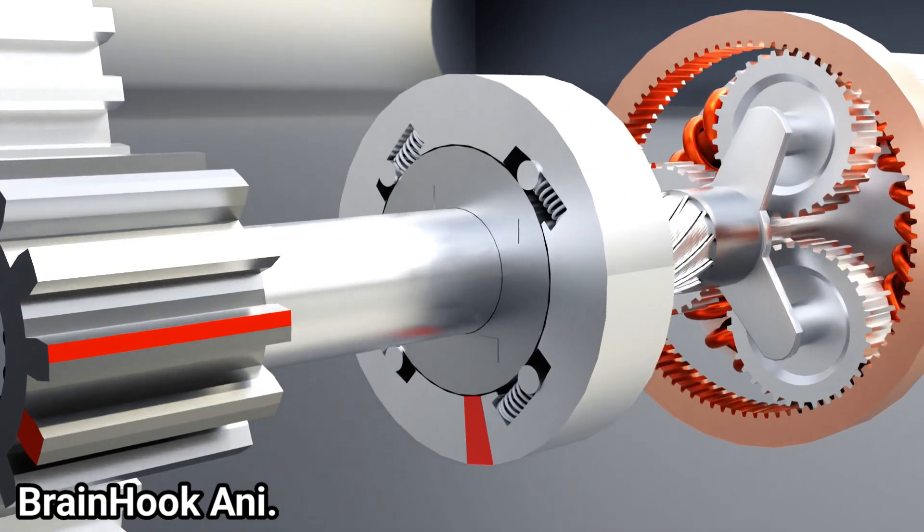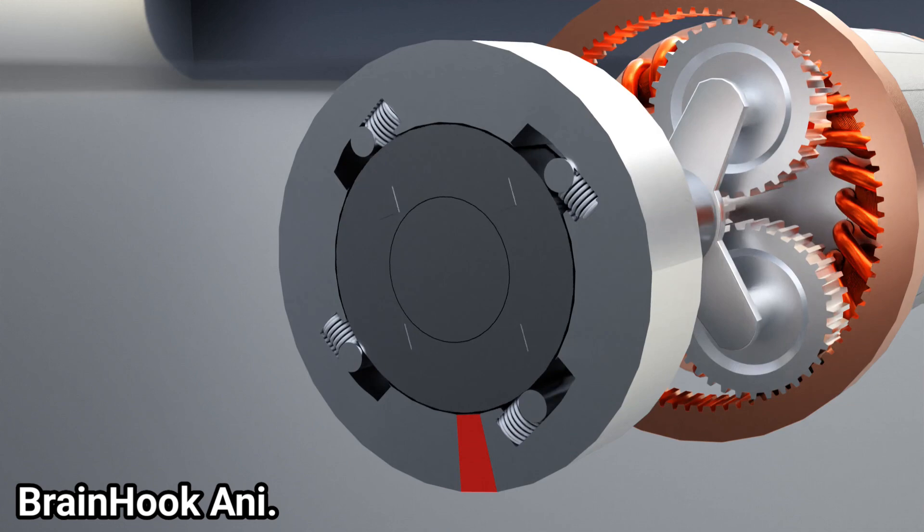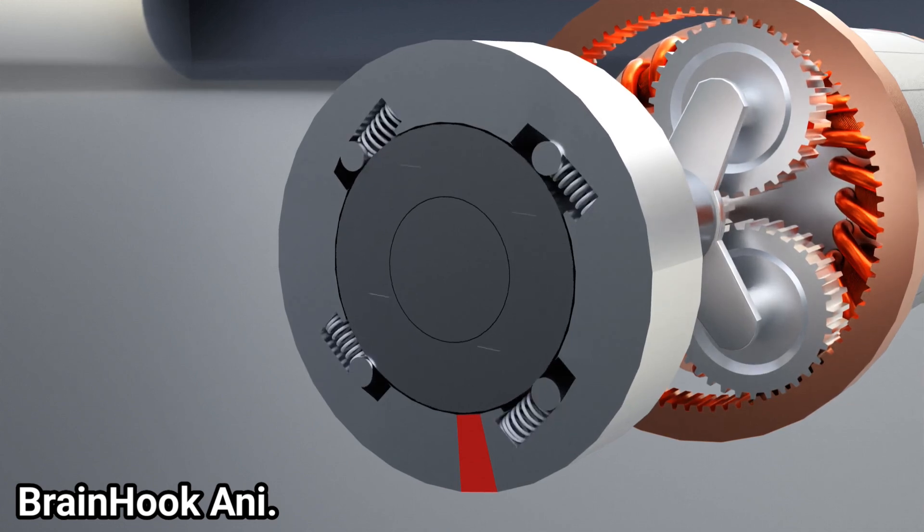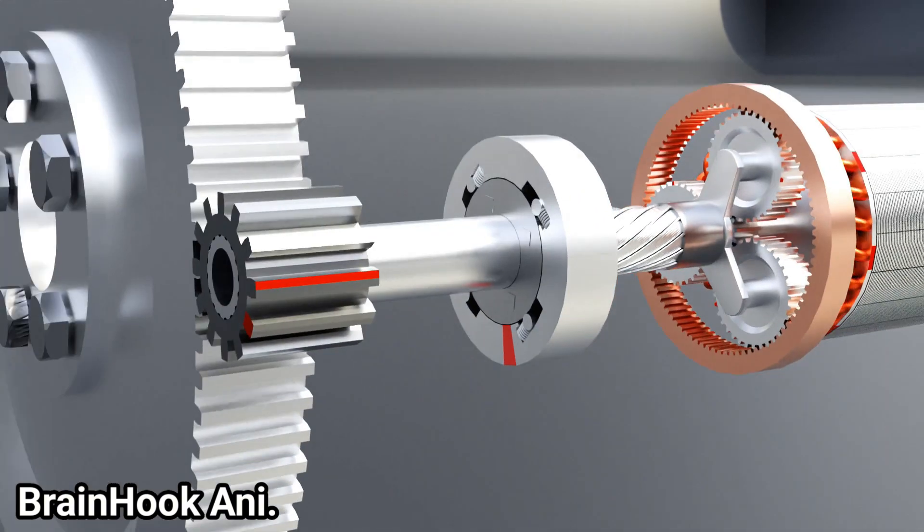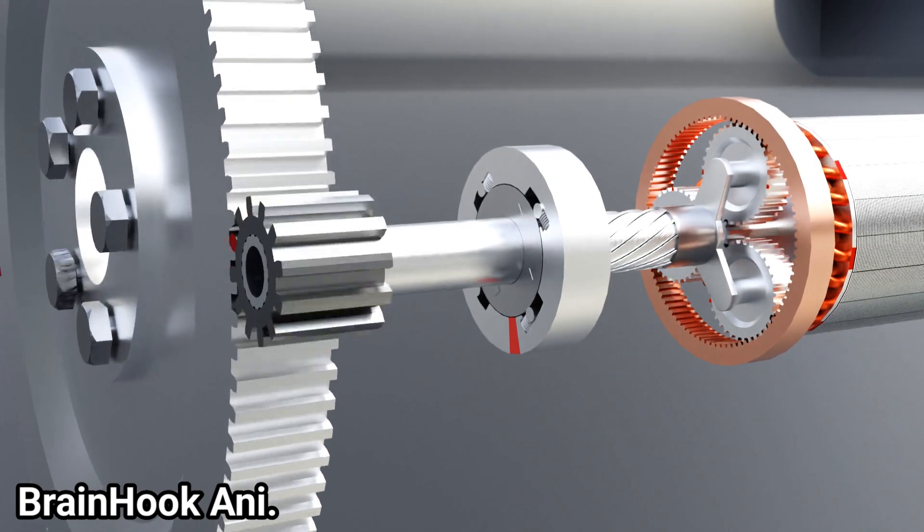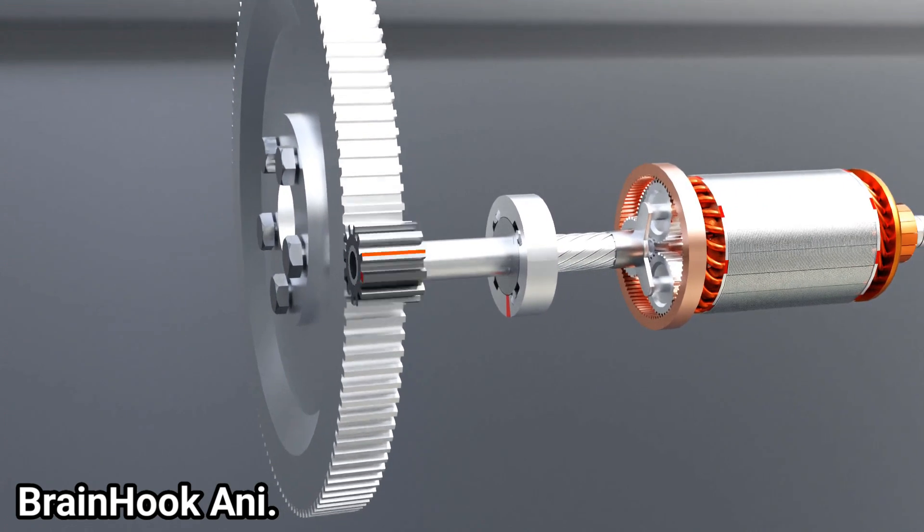On the contrary, when the pinion starts rotating by the flywheel due to the engine starting, that means the inner race starts rotating. The rollers also start rotating in the opposite direction and move backwards. Since there is enough space at the back, the inner and outer races are free. And the inner race rotates freely without rotating the outer race.